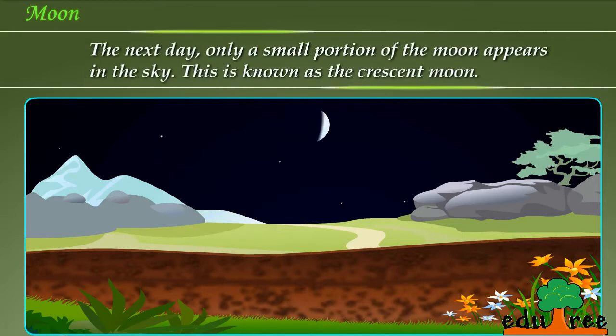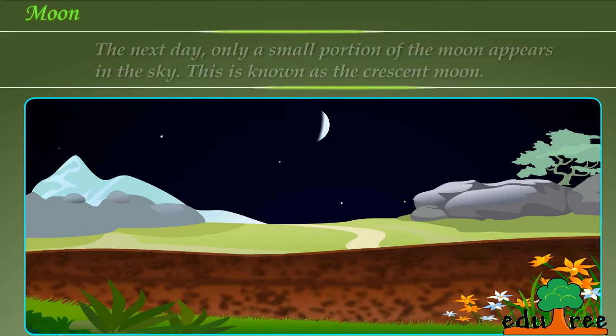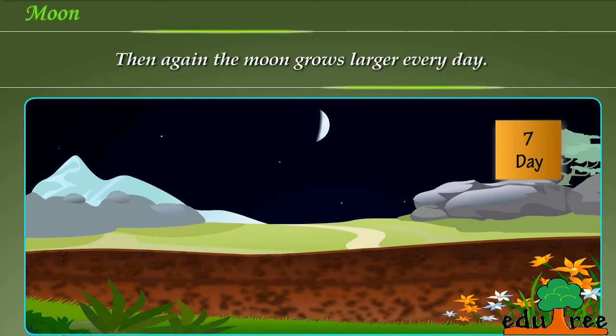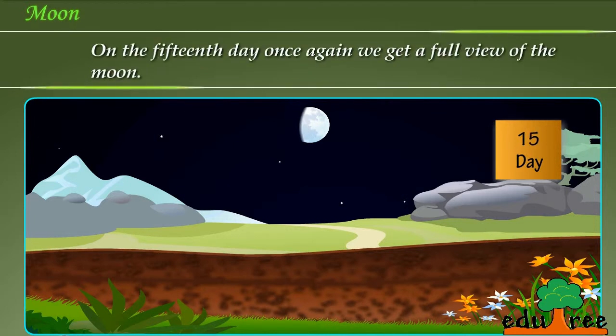The next day, only a small portion of the moon appears in the sky. This is known as the crescent moon. Then again, the moon grows larger every day. On the 15th day, once again we get a full view of the moon.